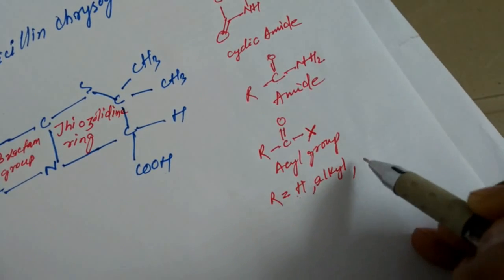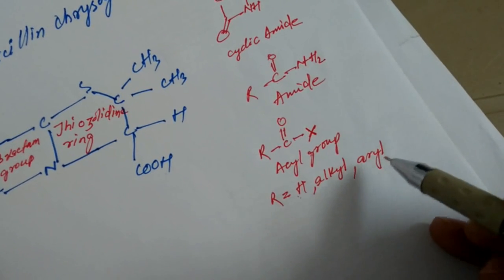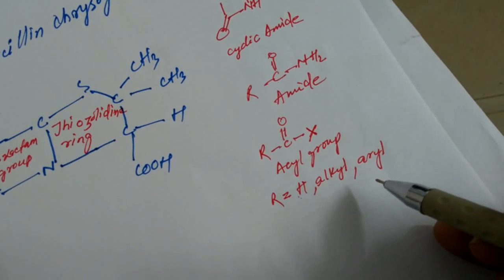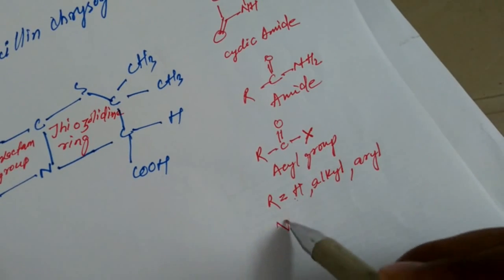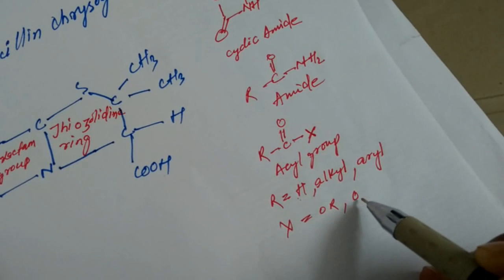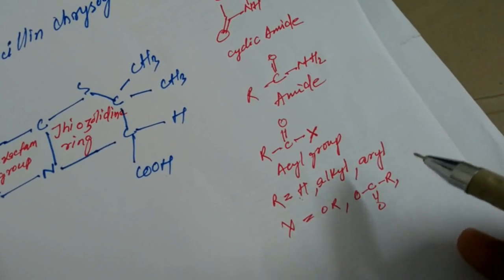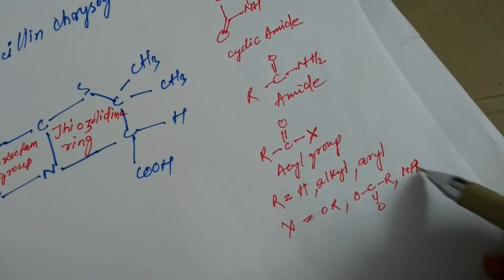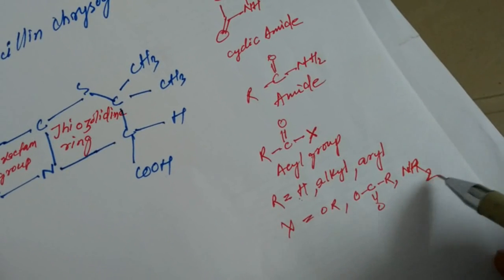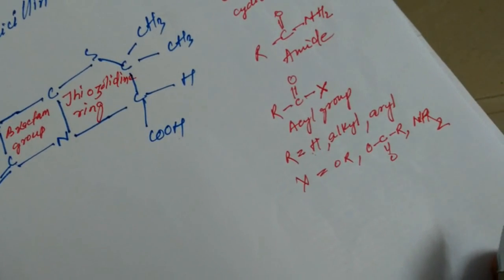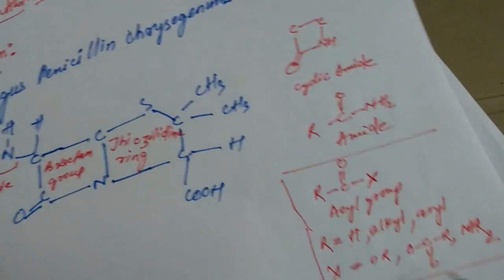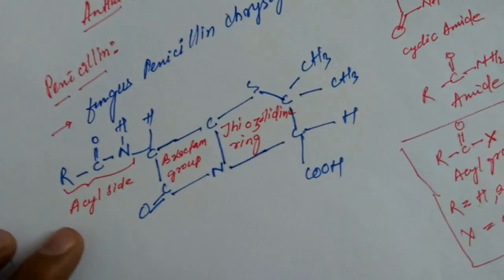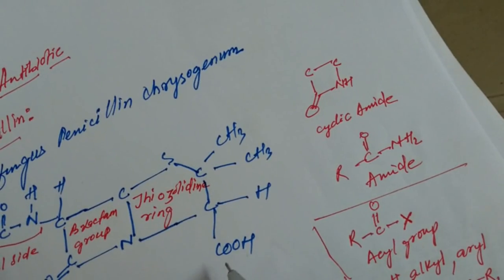R can be a hydrogen or an alkyl group. An alkyl group means a methyl group — then it is called an alkyl group. X can be OH, OR, or NR2. This is the acyl group — don't get confused. The acyl group used here is this one, in the penicillin structure.